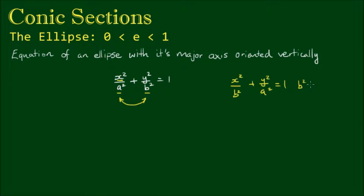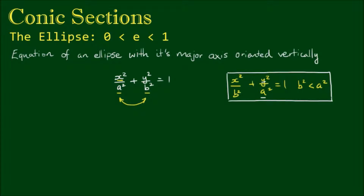Where b squared is less than a squared. In this equation, the semi-major axis sits below y, which is the vertical coordinate. Both these equations are for ellipses centered about the origin, and the relationship between b and a also remains common between them. So b squared can be expressed as a squared times the quantity 1 minus e squared, where e is the eccentricity. All the other features also remain the same, except their coordinates have been switched around.